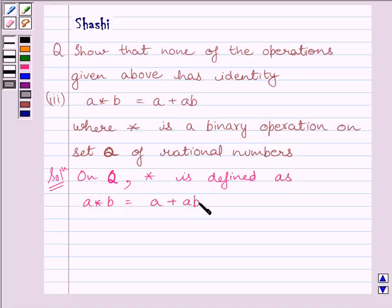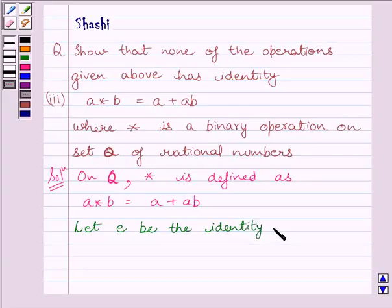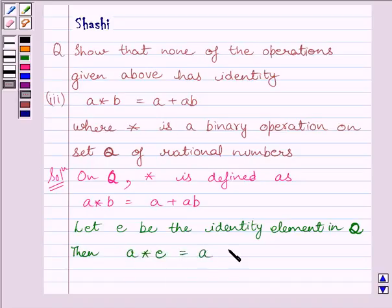Now, let us assume E is the identity element in Q. Then A star E must equal A, must equal E star A, for every A belonging to set Q.